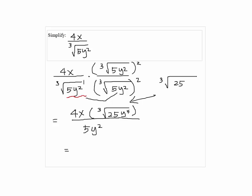Now, cube root of 25y to the 4th power can be simplified. Y to the 4th is written as y cubed times y, so we can get the y out. So y times cube root of 25y.